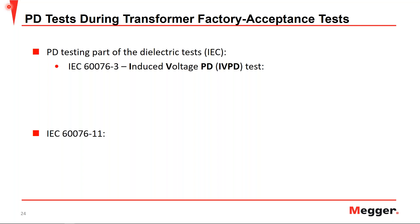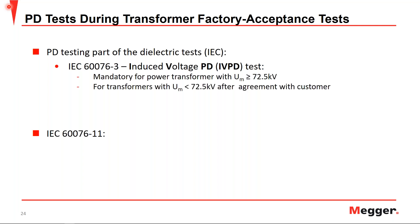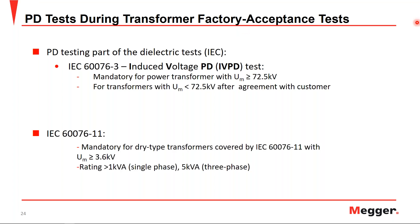According to IEC 60076-3 baseline standards for factory acceptance testing, partial discharge is part of the induced voltage test, either combined with a withstand test or as a standalone induced voltage partial discharge test. Partial discharge testing is mandatory for power transformers with maximum voltages above 72.5 kV. For power transformers below 72.5 kV, the need depends on agreement between supplier and customer. Partial discharge is mandatory for all dry type transformers under IEC 60076-11 with a maximum voltage below 36 kV and a power rating above 1 kVA for single transformers or 5 kVA for three-phase transformers.